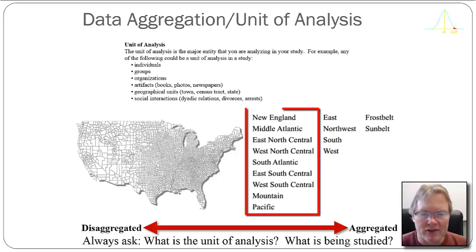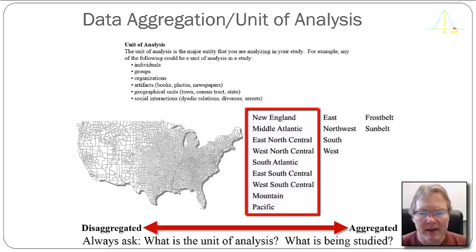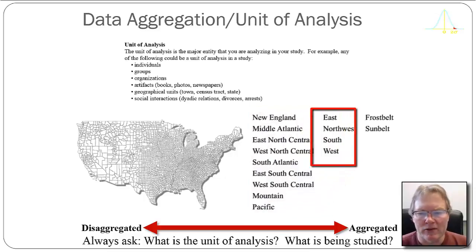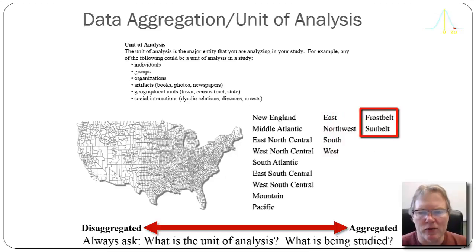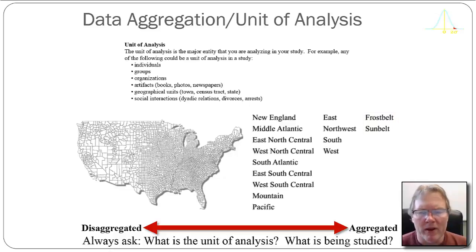I have the census divisions here — New England, Mid-Atlantic, and so forth. There are nine of them. We could further collapse it into regions: the east, the northwest, the south, or west. And then we could even further subdivide that into two groups: the frost belt and the sun belt. When we do any kind of statistics and try to interpret our analysis, we need to pay attention to what it is we're measuring, how it's being measured, and the unit of analysis — particularly the unit of aggregation.